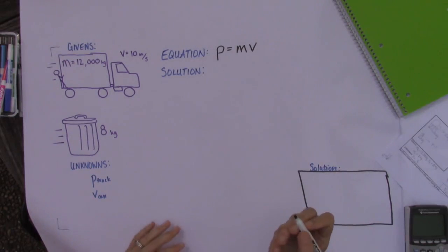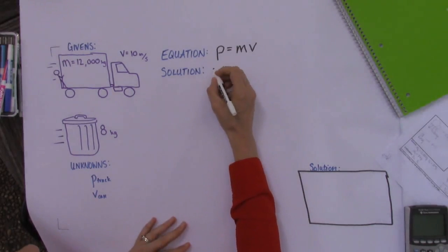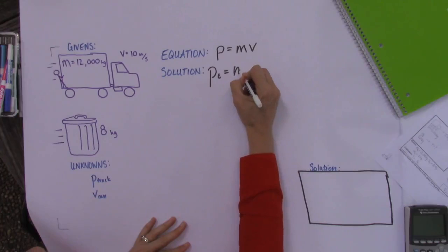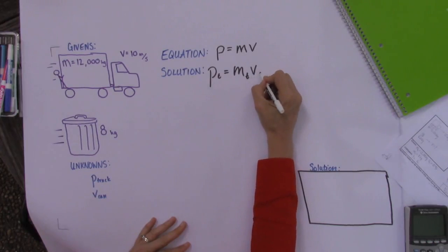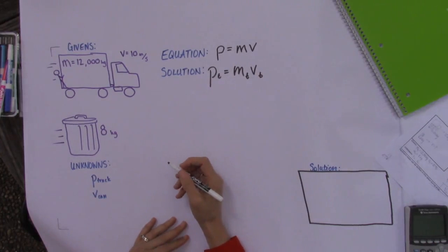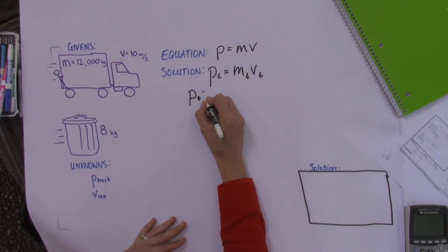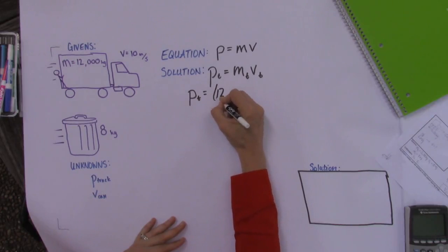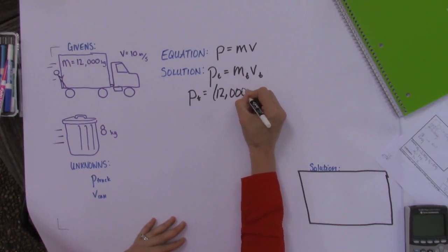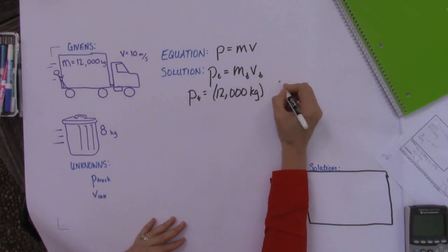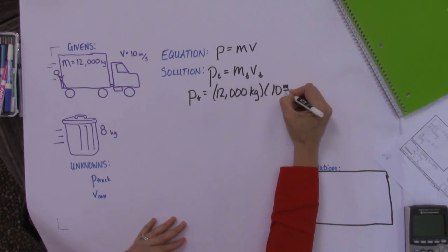So for the truck we've got P_truck equals the mass of the truck times the velocity of the truck. Pretty straightforward, right? So the truck's momentum is 12,000 kilograms times 10 meters per second.